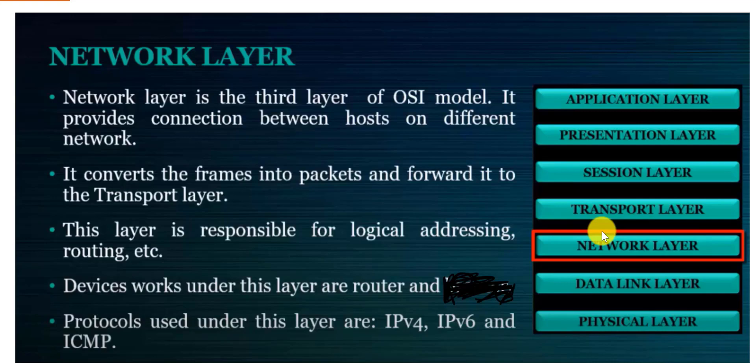The third layer of the OSI is the Network layer. While the Data Link layer handles communication on the same network, the Network layer goes further — it enables communication between hosts on different network segments using routing. It handles IP routing, allowing devices on different locations and even different continents to connect over the internet using technologies like MPLS and VPN connections.